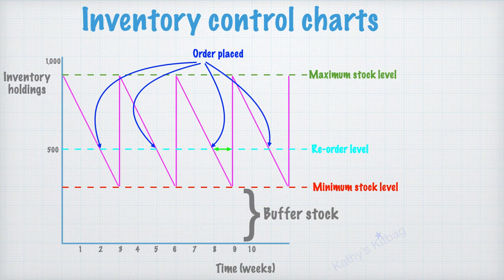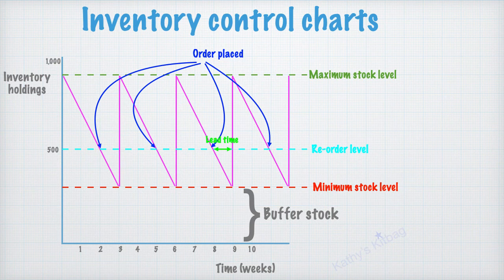So the next thing that you can see now, I've put this little green line in. So that's showing in this example with that reorder level of 500 units, you can see here, you've got a lead time of one week.